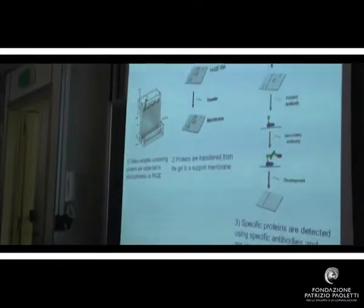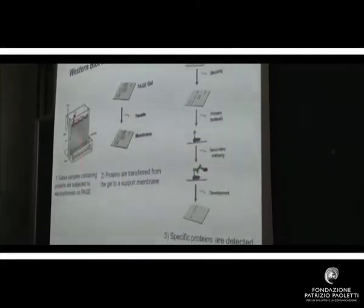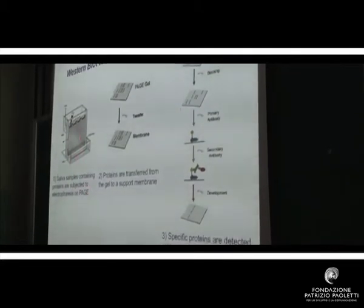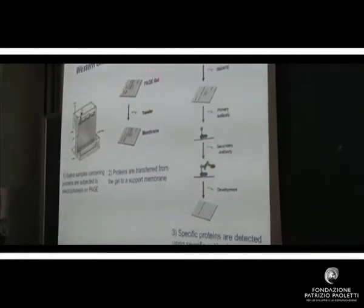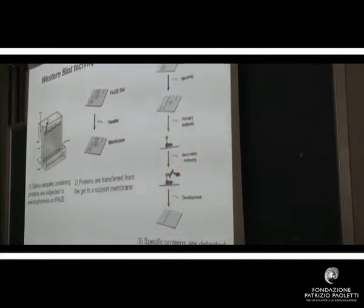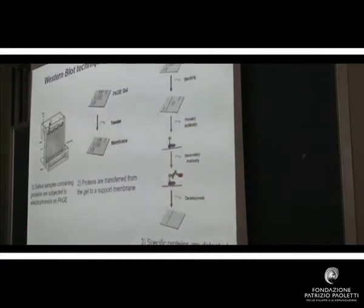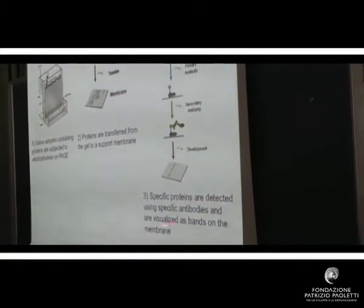Since the ELISA assay doesn't discriminate between the various forms of NGF, we decided to use a second technique that allows us to see specifically the different forms of NGF. This is the Western blot. The saliva samples are subjected to electrophoresis on a polyacrylamide gel, and the proteins move in this gel according to their molecular weight. Then they are transferred to a support membrane, and the detection of specific proteins in the membrane is still done by the use of a specific antibody that detects the specific proteins that we can visualize as bands on the membrane.